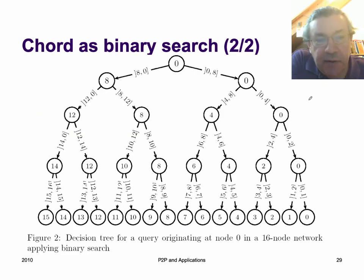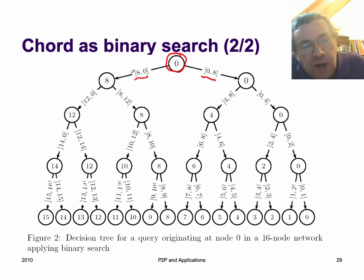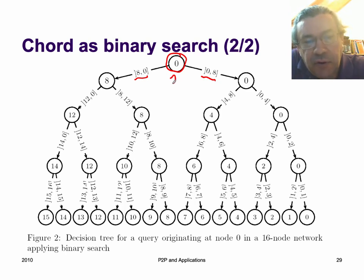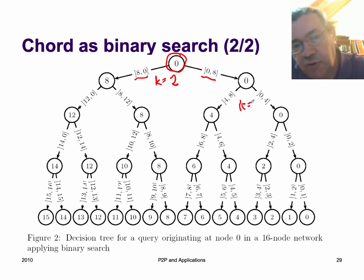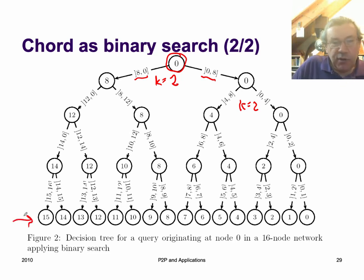Remember in Chord, each node has four routing entries. These four entries correspond to levels in the search tree: the first level goes from the full interval to half the size, the second from half to one-fourth, then one-eighth, then one-sixteenth. So starting from node 0, you choose the interval 0–8 or 9–16, giving K equal 2. Each successive choice halves the interval until you reach a single node. Chord can therefore be seen as a binary search.